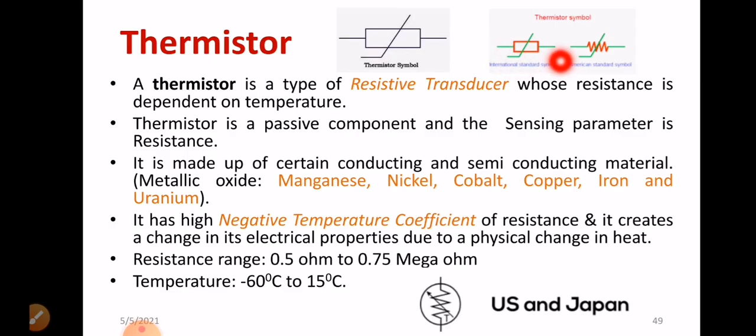Similarly, according to American standard, you can represent the thermistor in this way. To operate thermistor, we require external excitation. External supply has to be provided for the operation of thermistor. Alone it cannot operate. Thermistor is a passive component and sensing parameter is resistance.